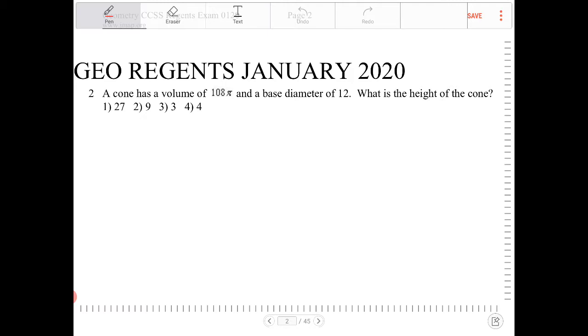You should always draw the diagram first. So I'm given a cone, and some information about this cone is given. It says the volume is 108π and the base diameter is 12.